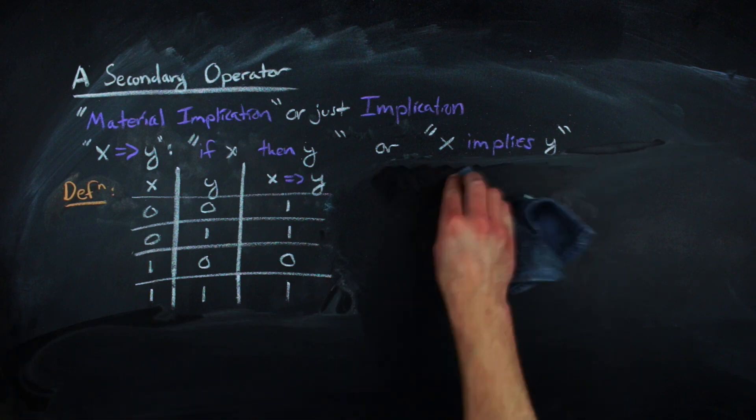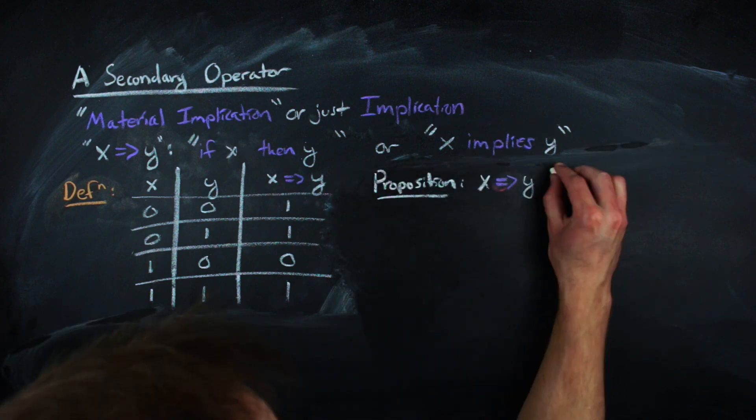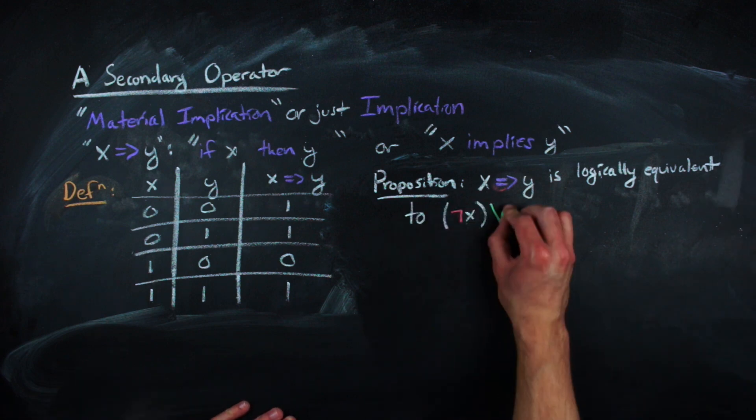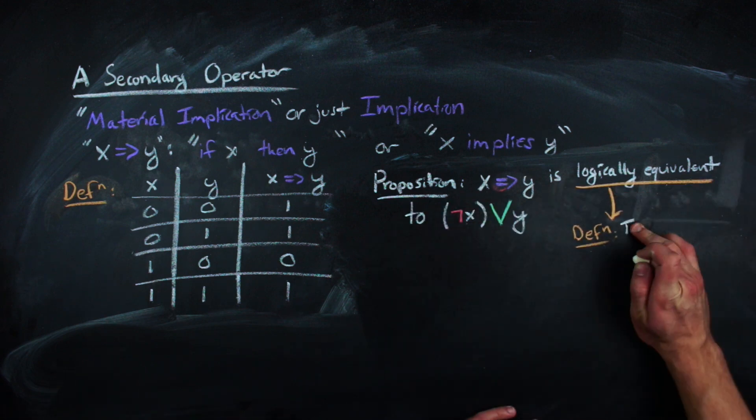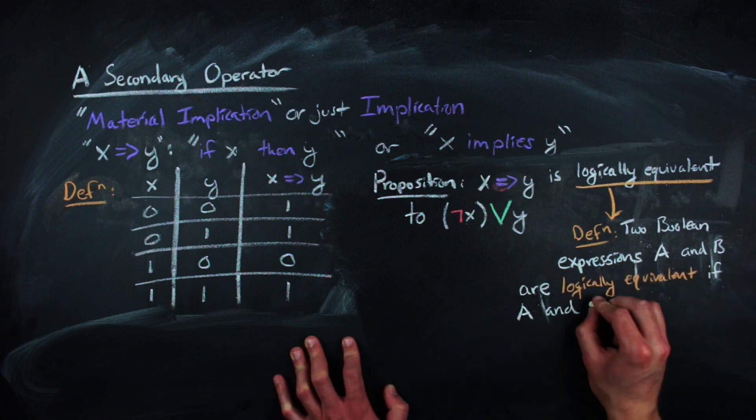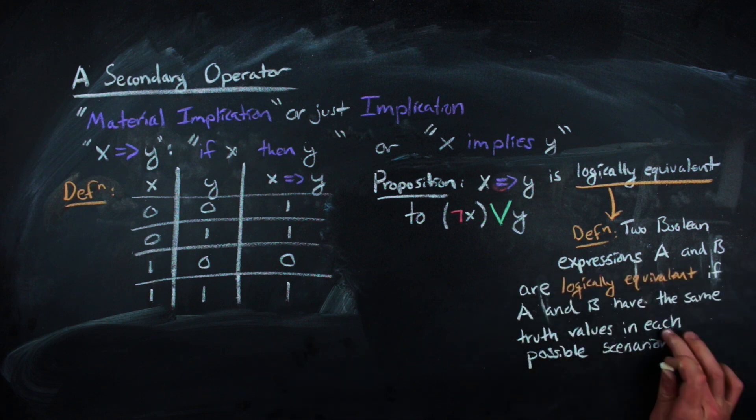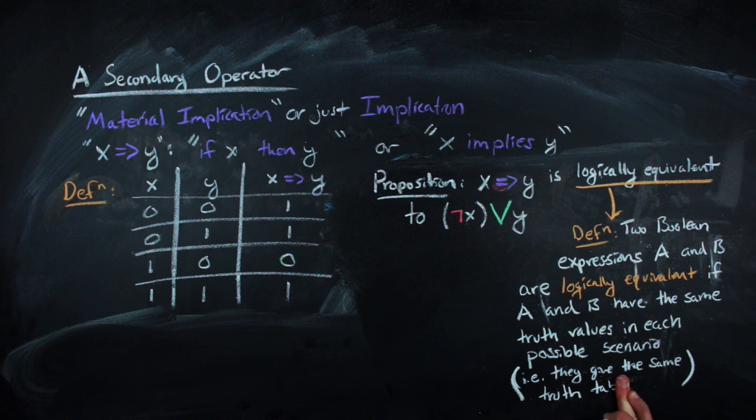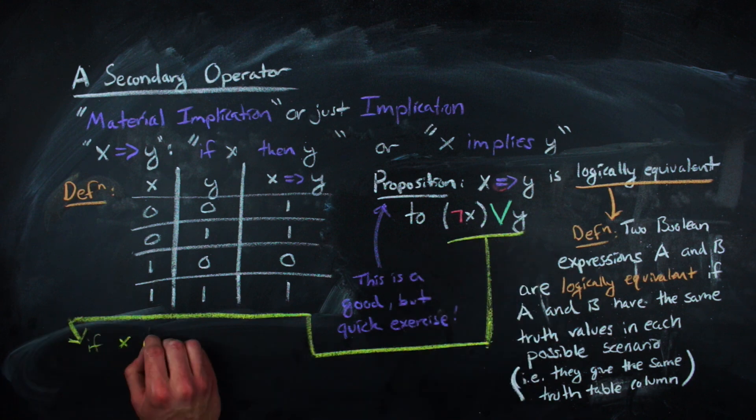Another more formal way of looking at how implications are defined is with their equivalent expression, not x or y. If you're skeptical if the two are actually equivalent, it's a good and quite honestly short exercise to prove that this is in fact the case. And when I say equivalent here, I'm talking about logical equivalents. So the two expressions should generate the same column of truth values in a truth table.